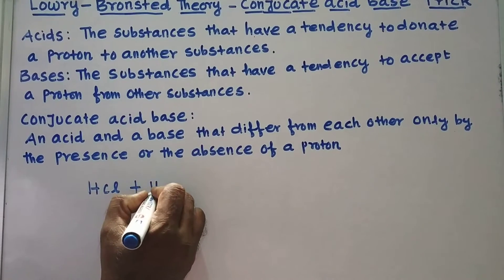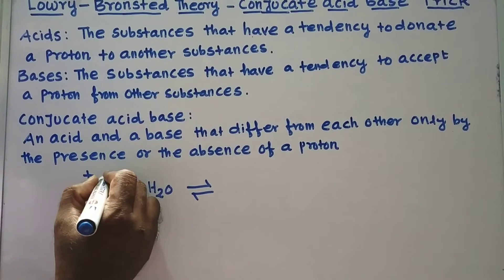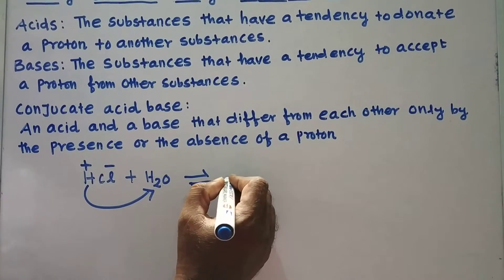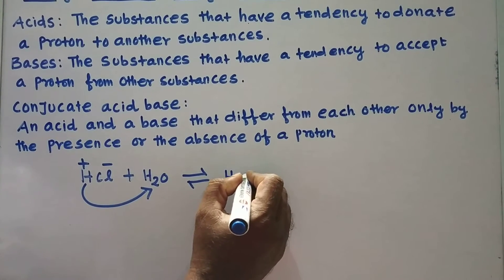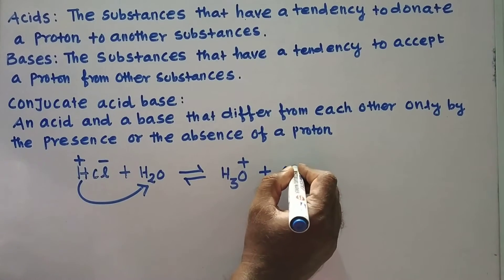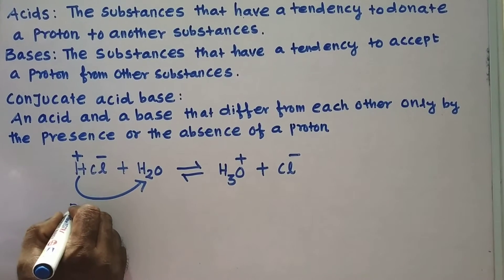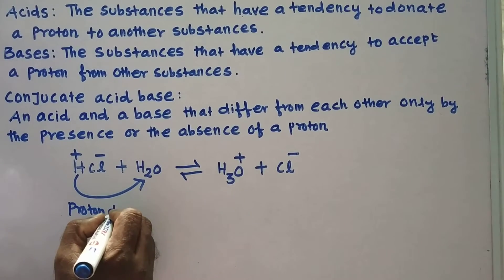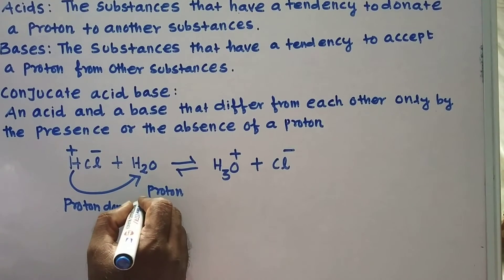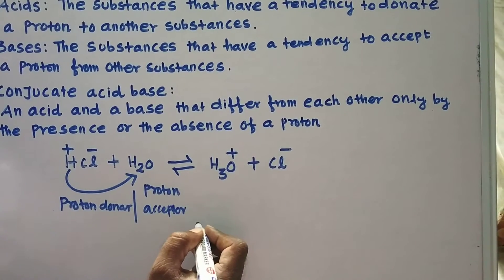When HCl is dissolved in water, it donates a proton to the water. As a result, HCl combines with water and forms H₃O⁺, a hydronium ion, and a Cl⁻ chloride ion. Here, HCl is a proton donor, and water is a proton acceptor.